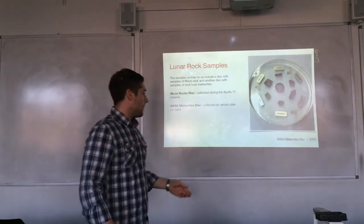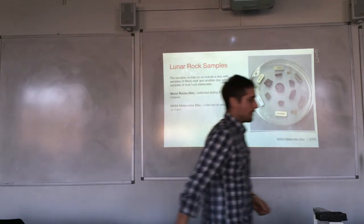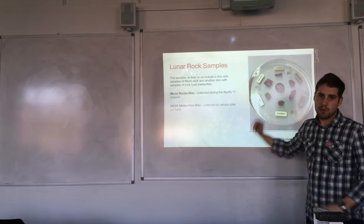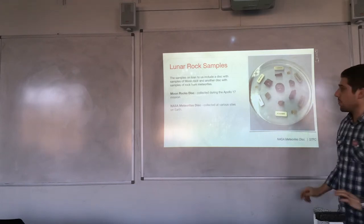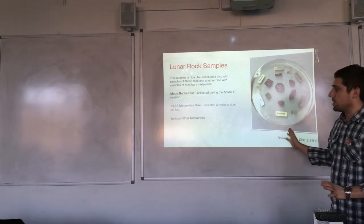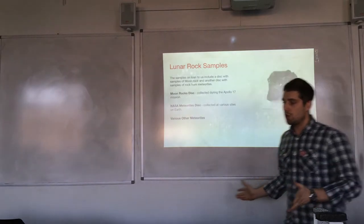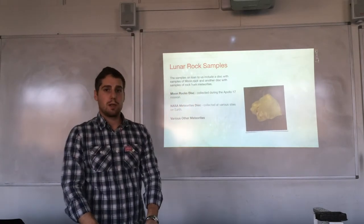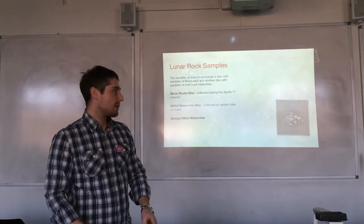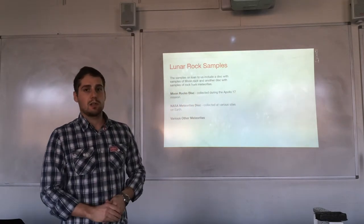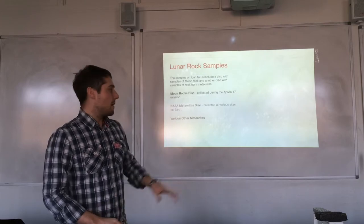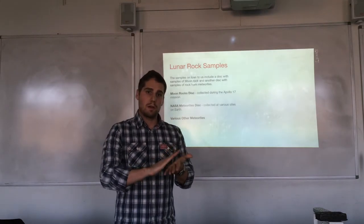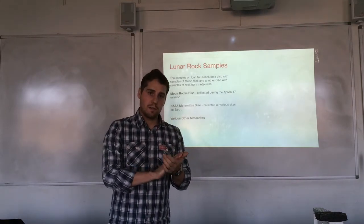In addition to the perspex disc, we did have some meteorites which could be handled: a nickel-iron one, a Libyan desert glass, and a pallasite section. The pallasite section has been cut so that we can see the various layers involved.